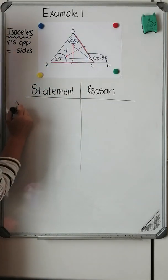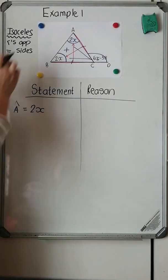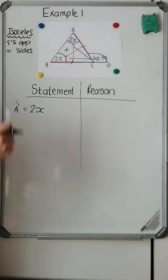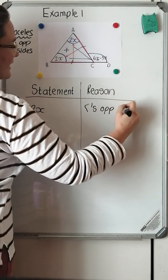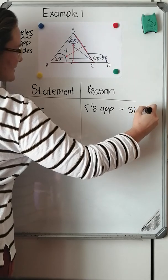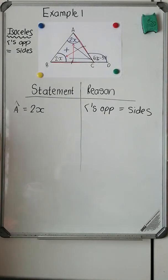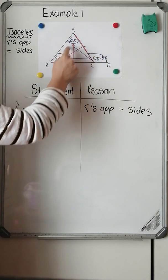Angle A equals 2x is my statement. How do I know this? What is my reason? Because it's an isosceles triangle, but I can't write isosceles triangle — I have to write the accepted abbreviation: the angles that are opposite equal sides. So angle A is 2x. Now let's make an equation to solve for x. We know because of exterior angles of a triangle that the outside angle is equal to the sum of the two interior opposite angles.